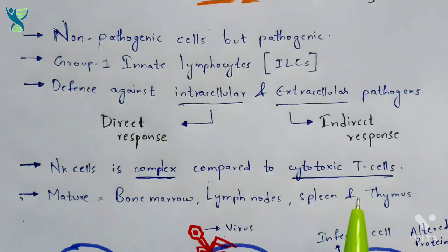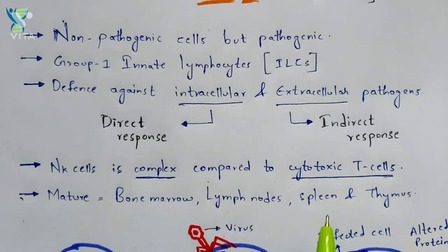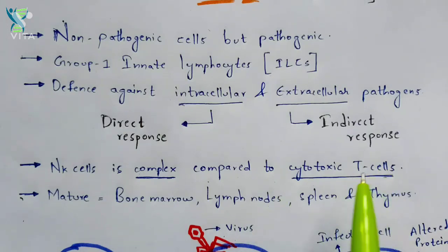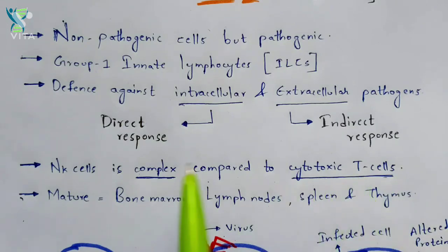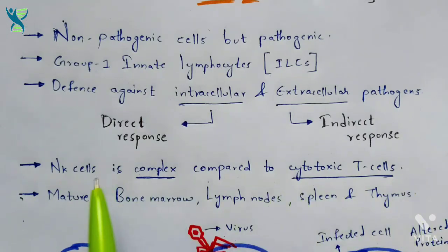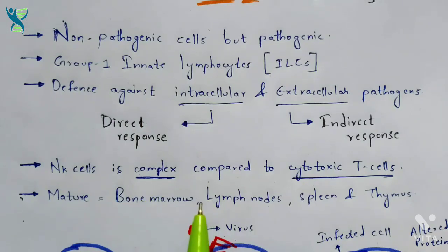In the case of cytotoxic T cells, they recognize specific antigens entering the body with the help of cytotoxic T cell receptors. These receptors release cytotoxins — which include perforins and granzymes — that help kill the infected cell. That is the function of cytotoxic T cells. However, NK cells are even more highly complex when compared to cytotoxic T cells, as will be clear in the diagrammatic part.